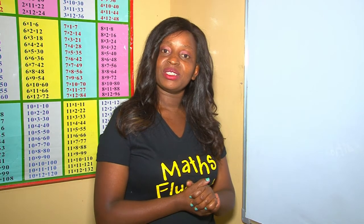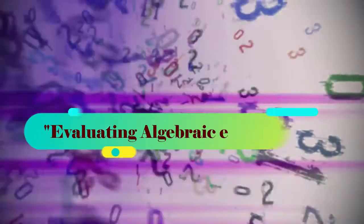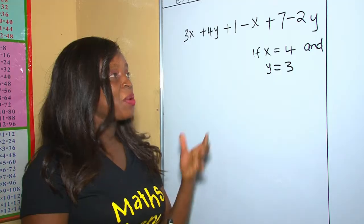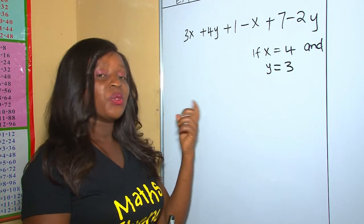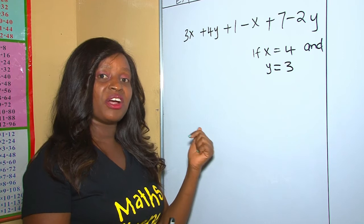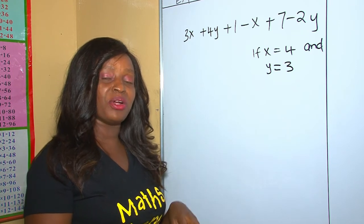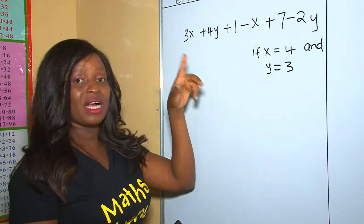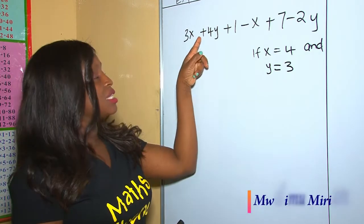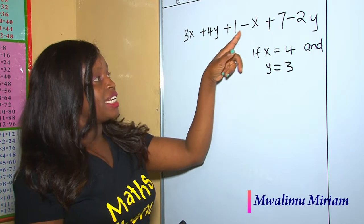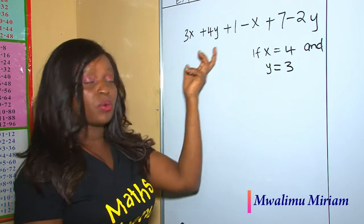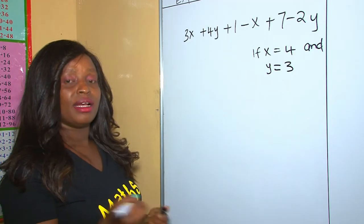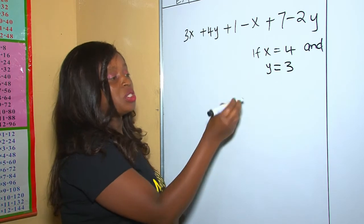Welcome to my YouTube channel. Today's lesson is about evaluating algebraic expressions. When working out such a question, you need to consider the order of operation, which is BODMAS. As you can see in the question, there are more than one sign — there is an addition operation and a subtraction operation in the same question, so we need to follow the order of operation, which is BODMAS.